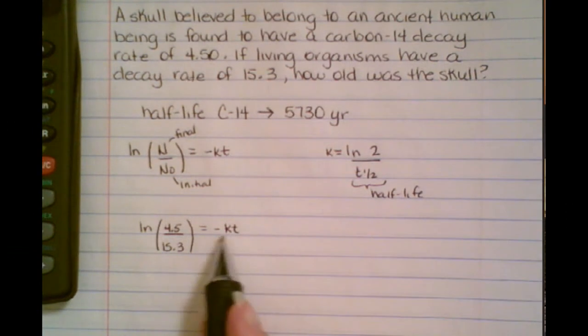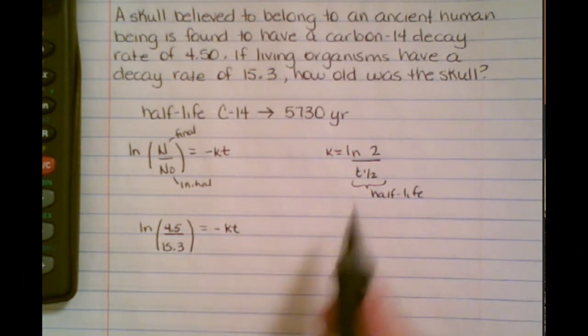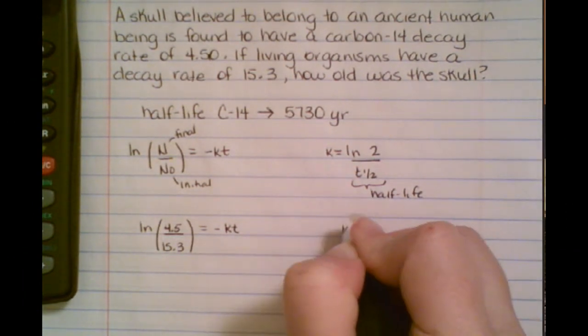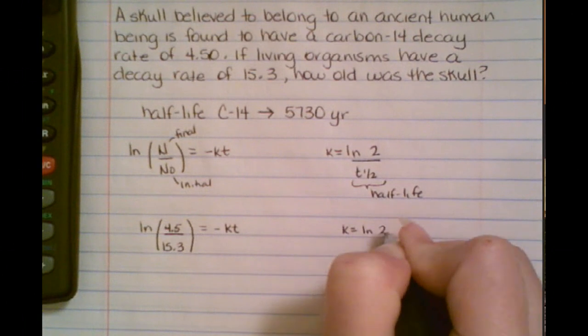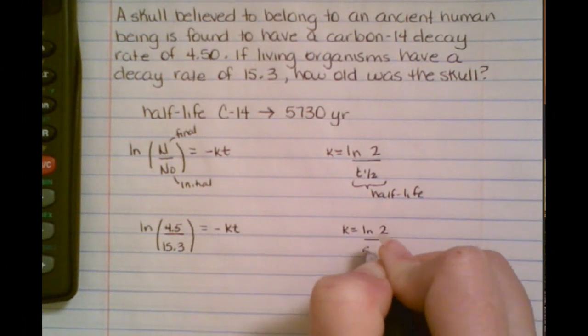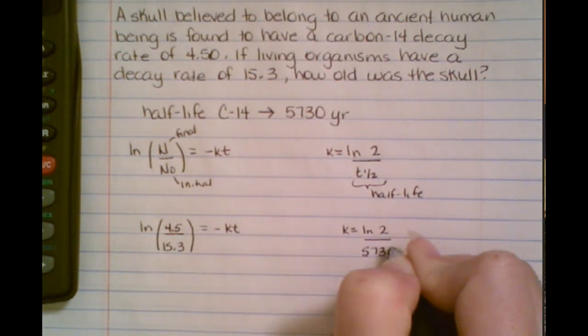But now I've got two unknowns here, so I need to find out what k is. So k equals the natural log of 2 divided by the half-life, which is 5730 in our case.